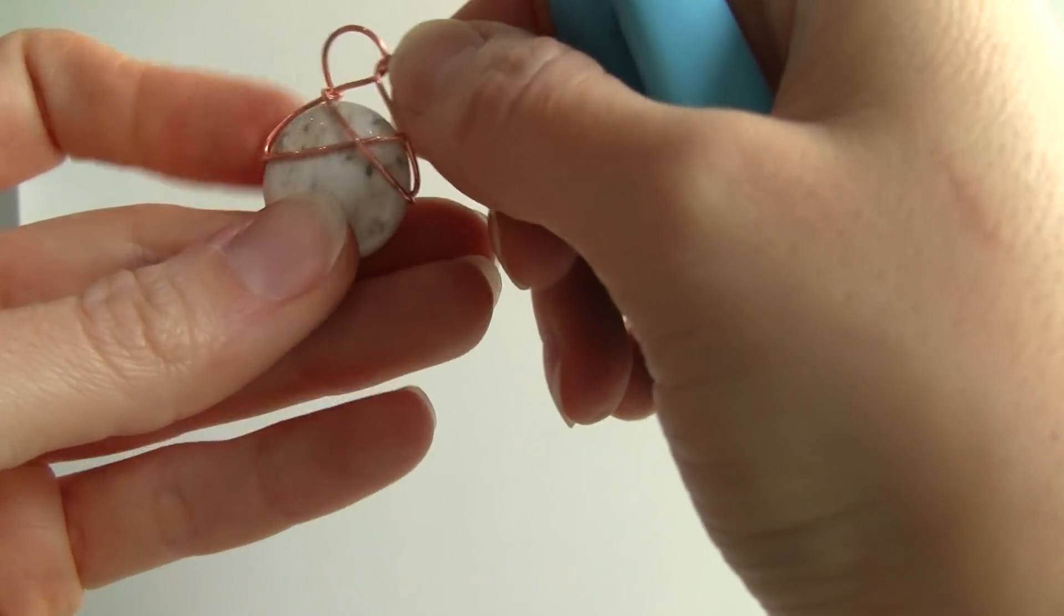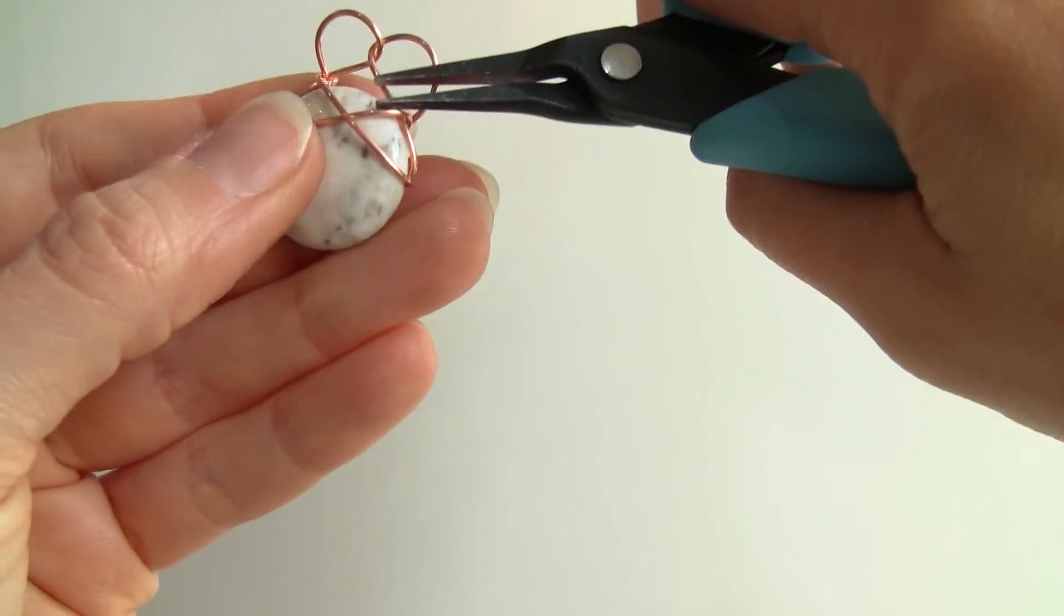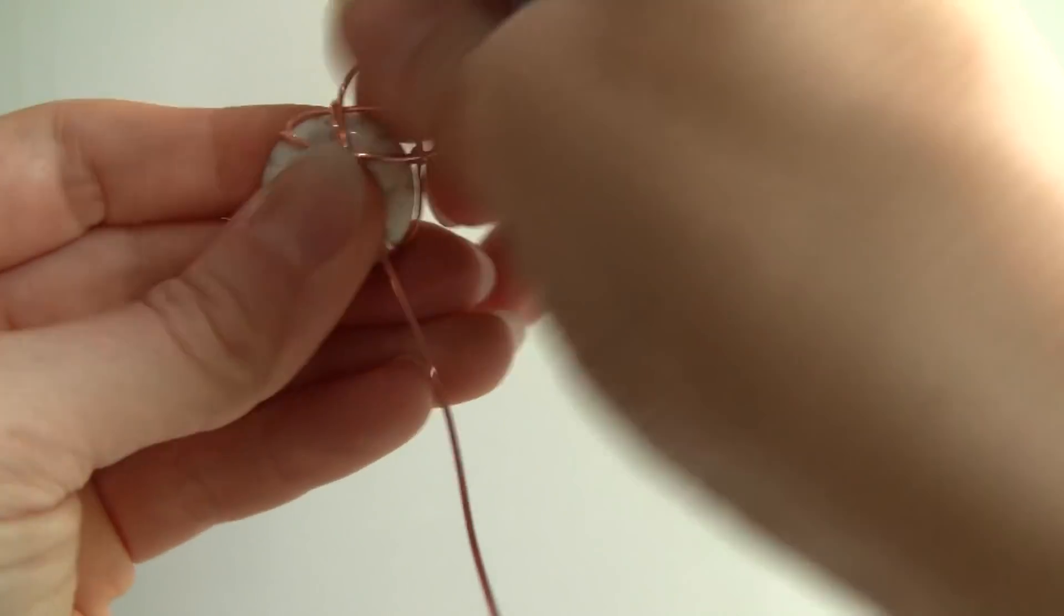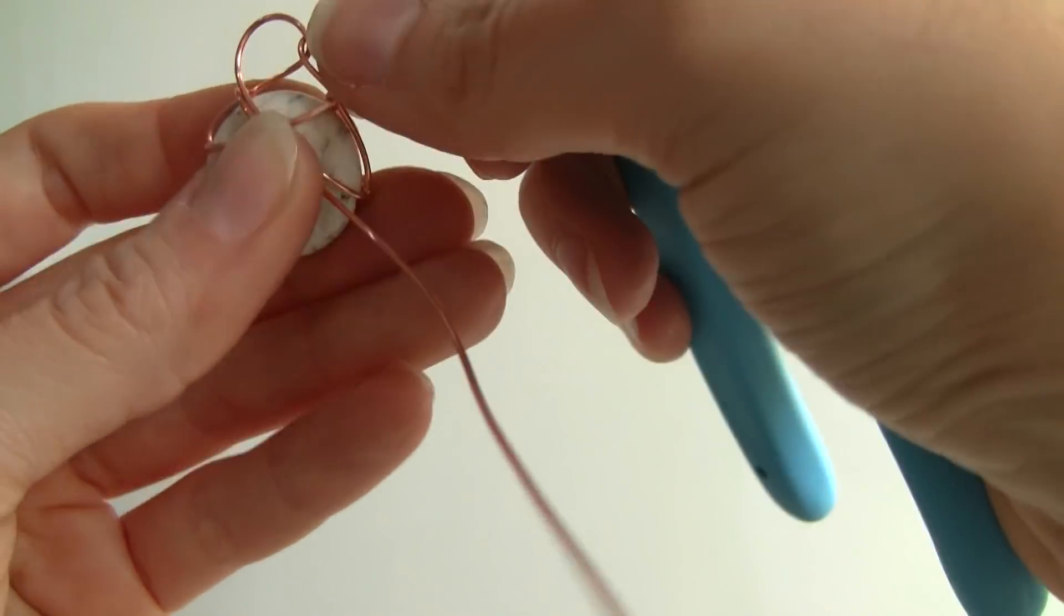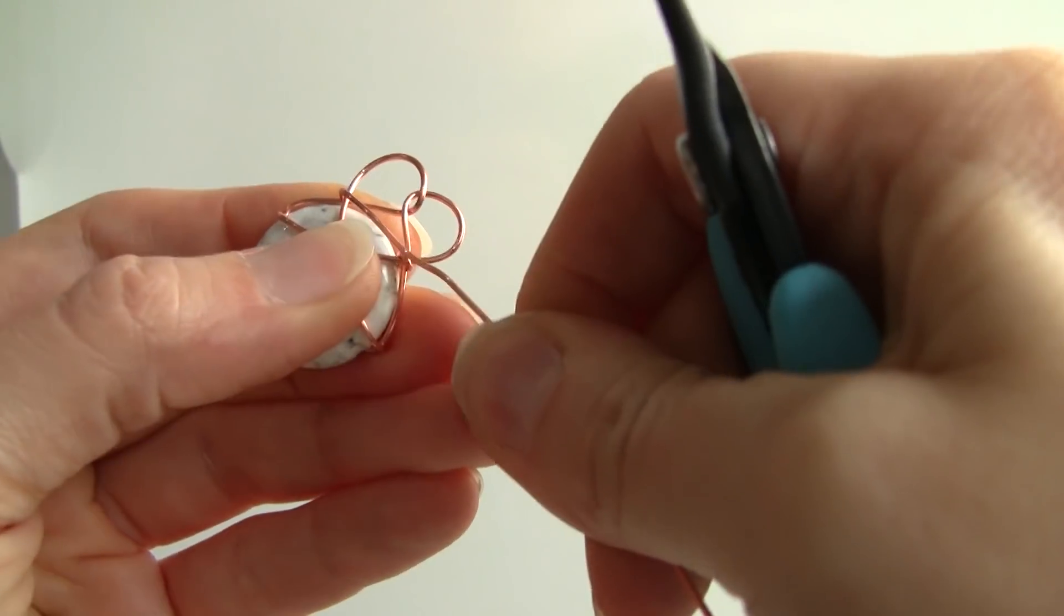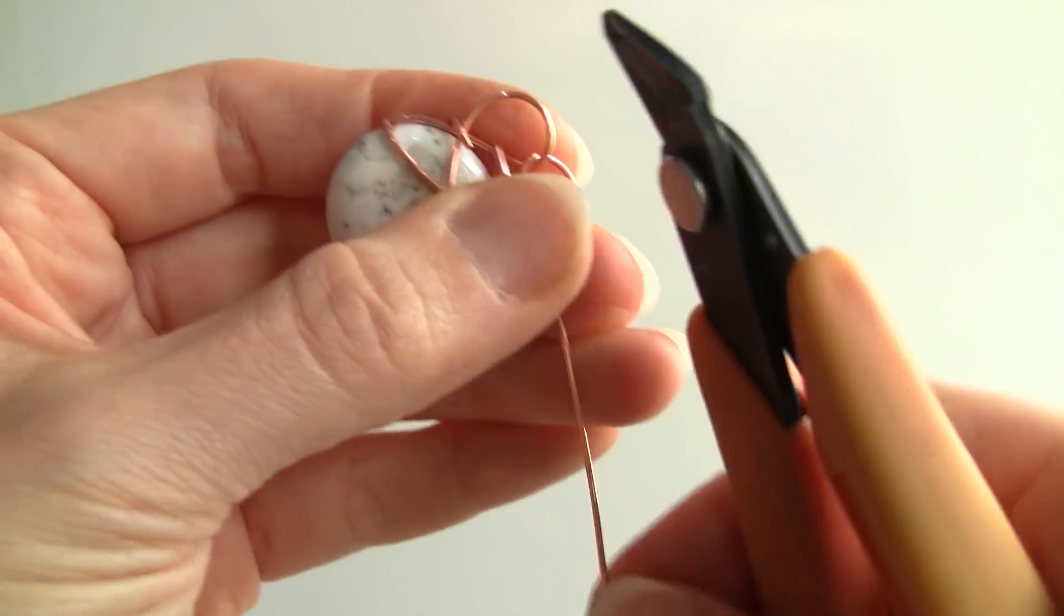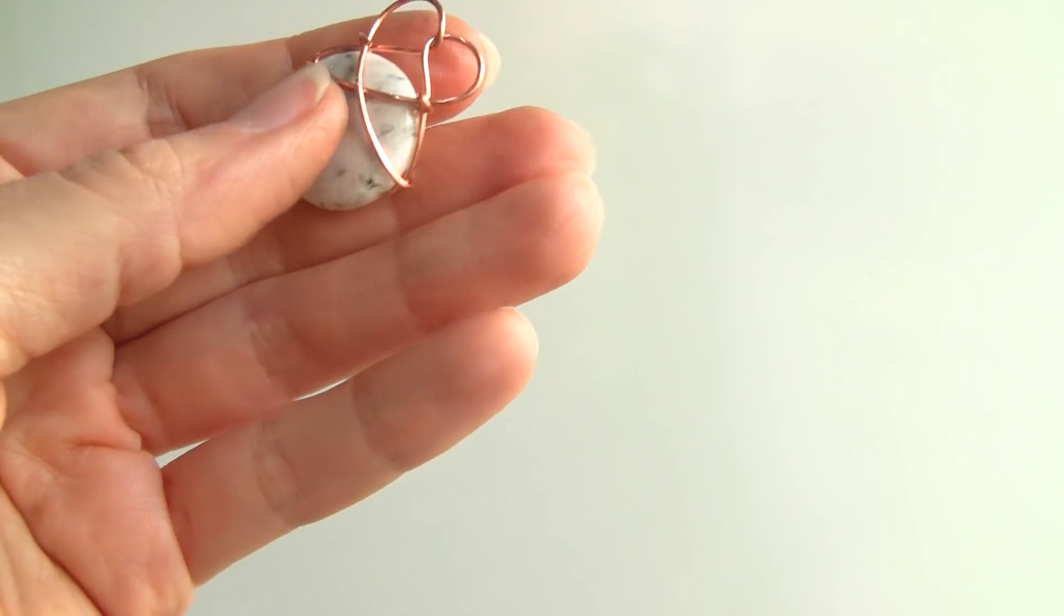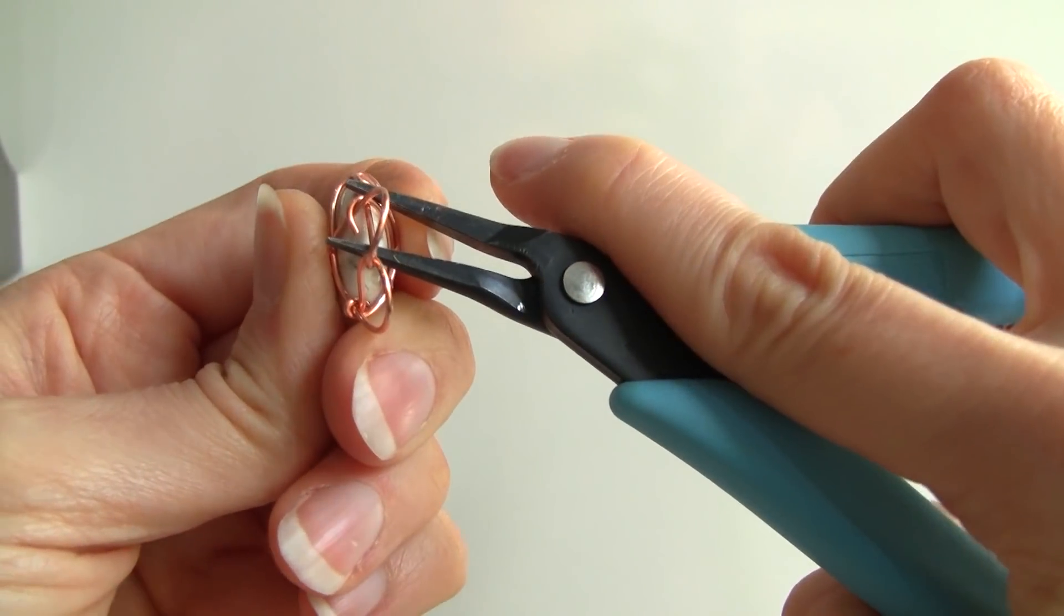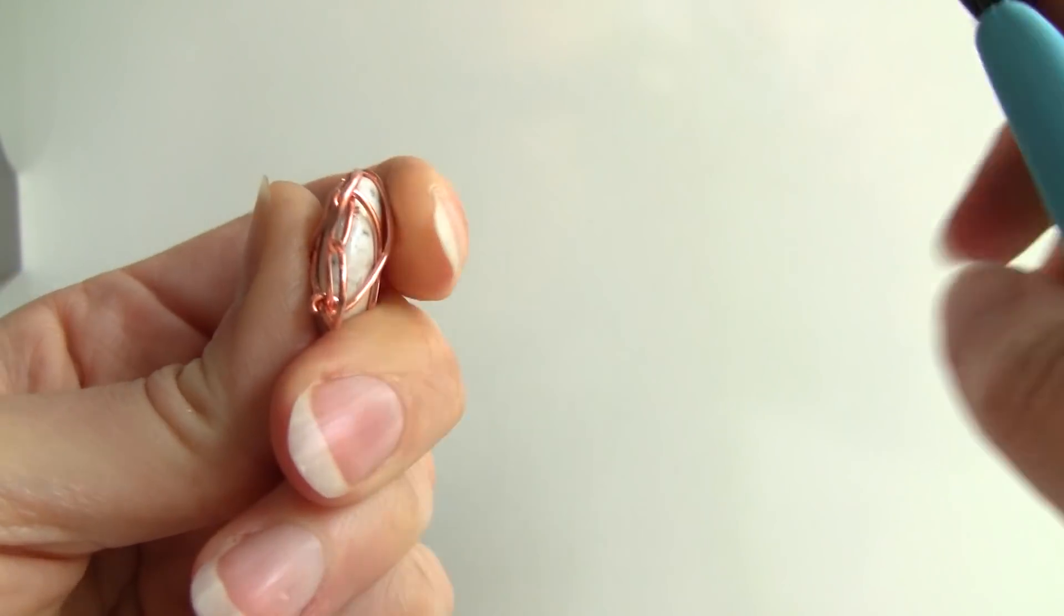So once you do that one, we'll fix this, I know it's a little crooked looking. So now you can do the next one. And it's just the same thing. Go ahead and give it a trim. Here's the little end coming through and close up that little loop.